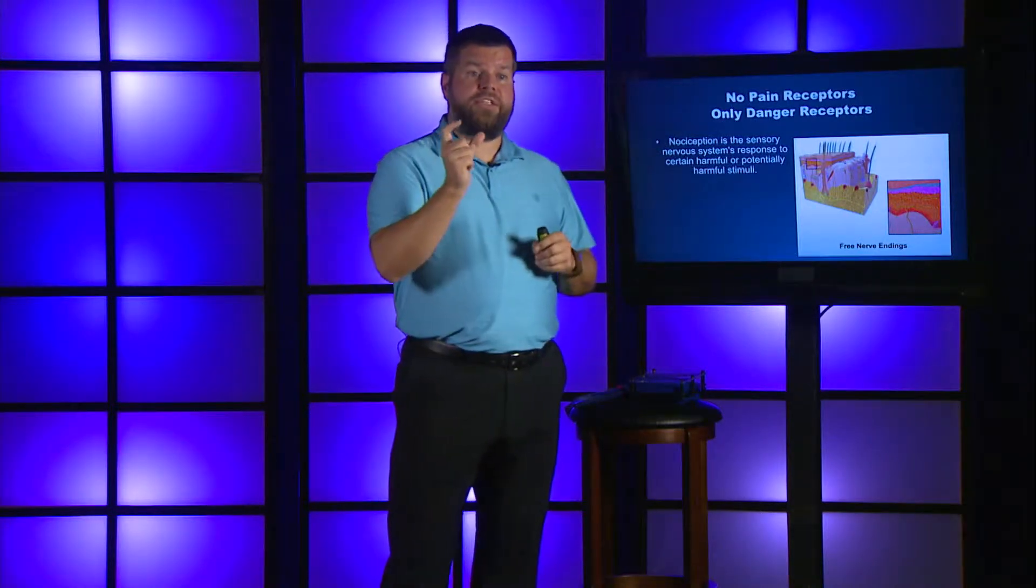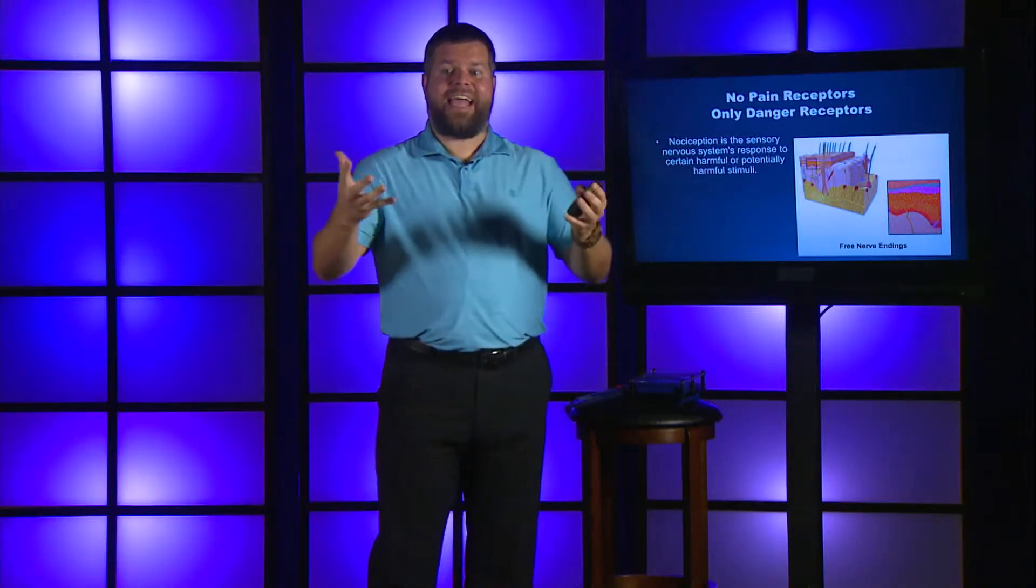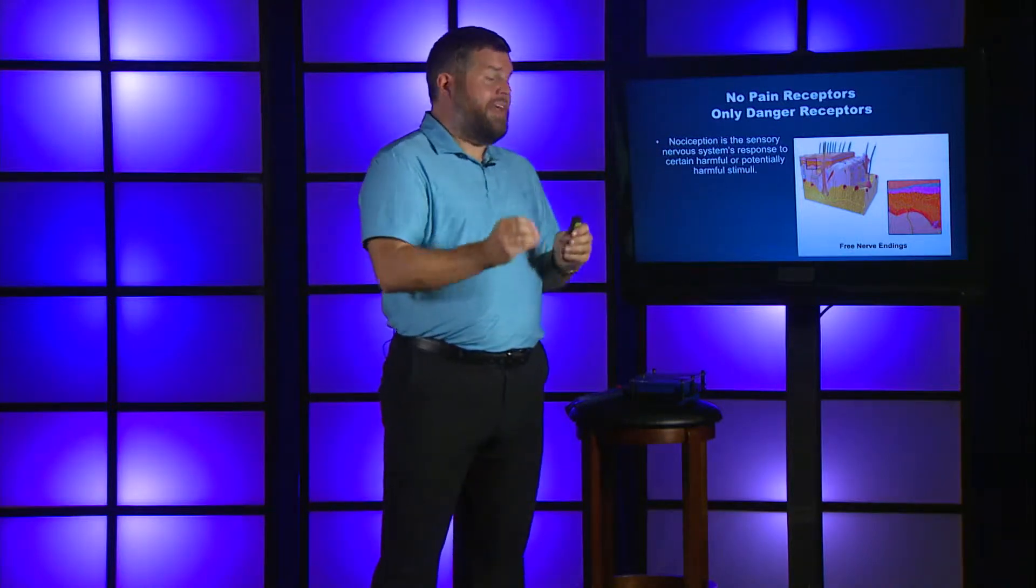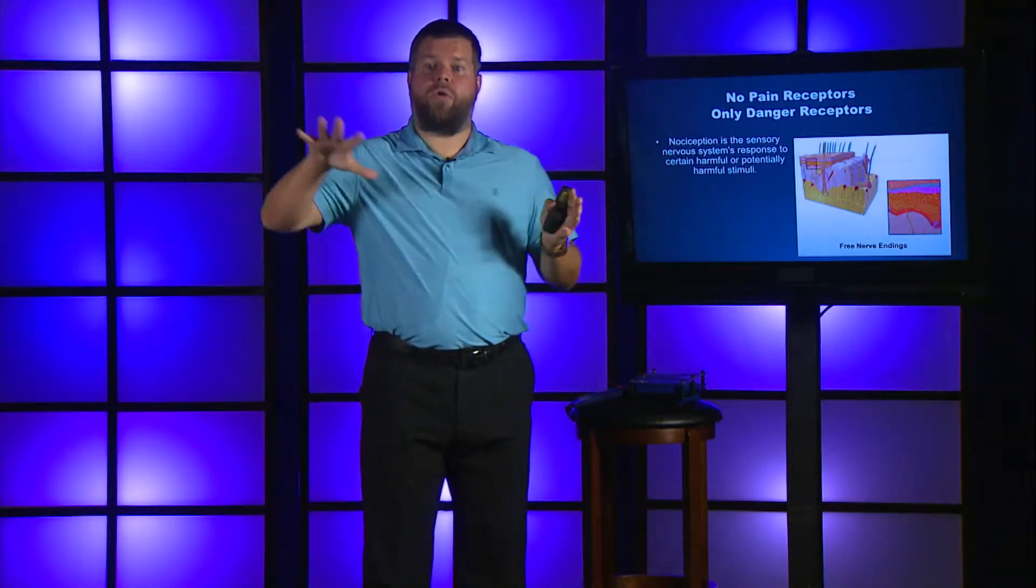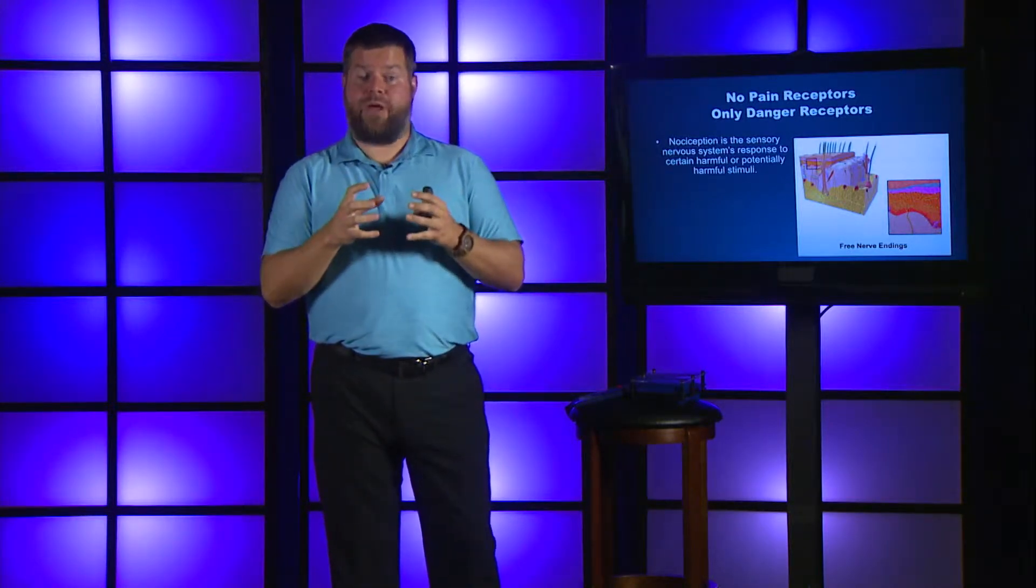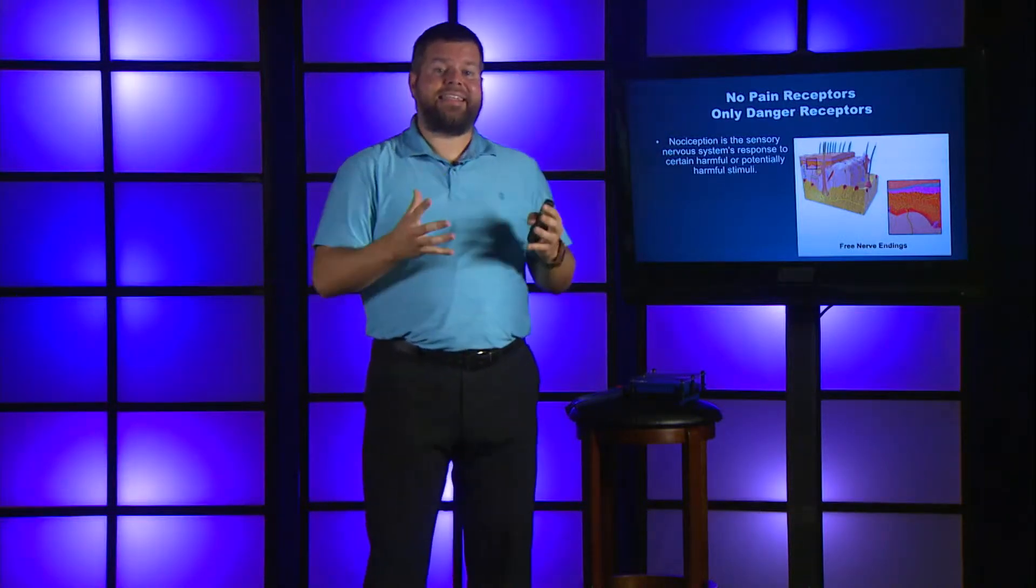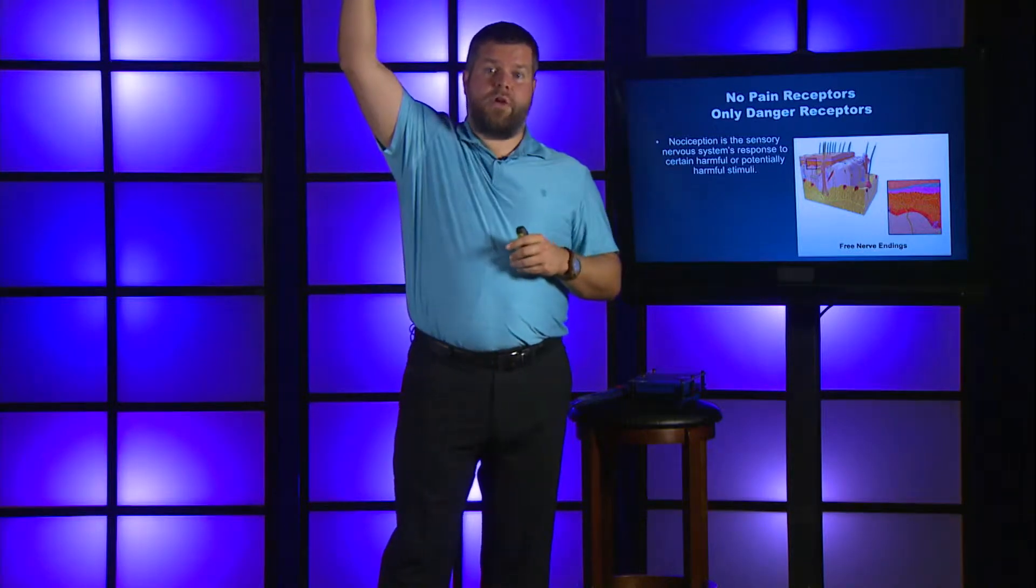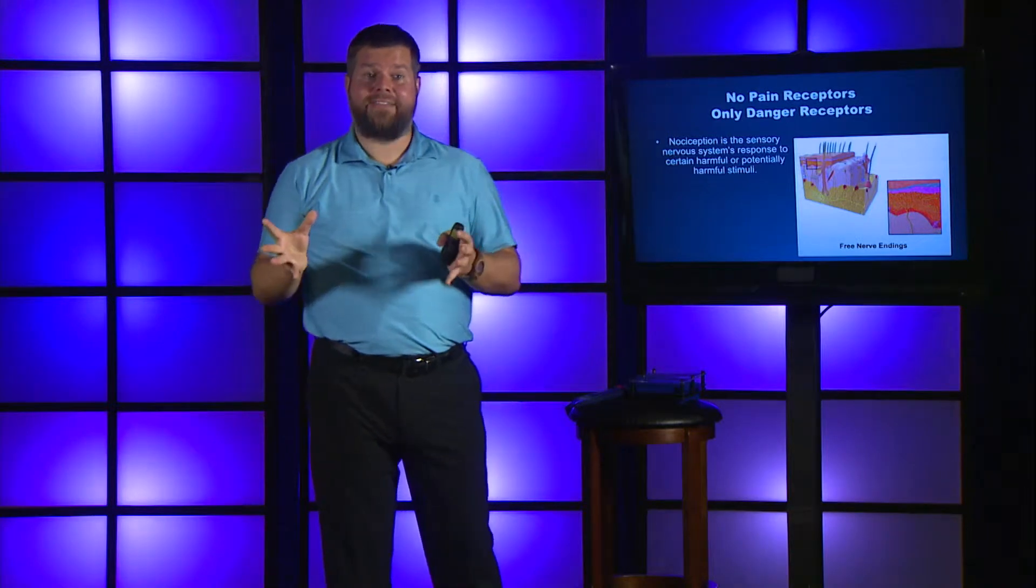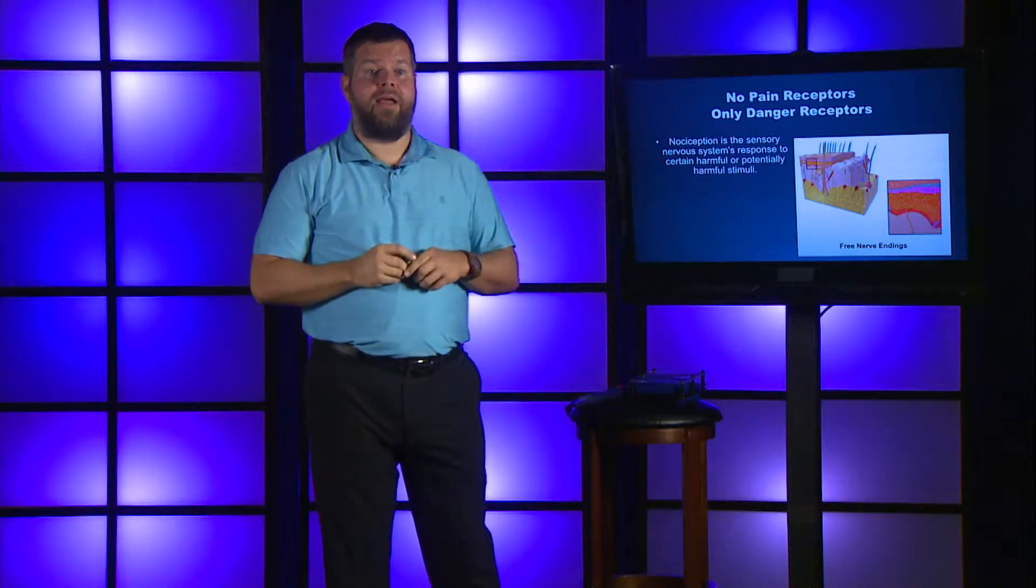What there are are these nerve endings called nociceptors, and what they detect is danger. All that they do is if they detect danger, they send a signal to your spinal cord. At your spinal cord, what happens is the spinal cord decides whether this is a serious message or not so serious. If it thinks it's a serious message, it sends the signal of nociception up to your brain. From there, your brain decides what you're going to experience, whether you experience pain or no pain.